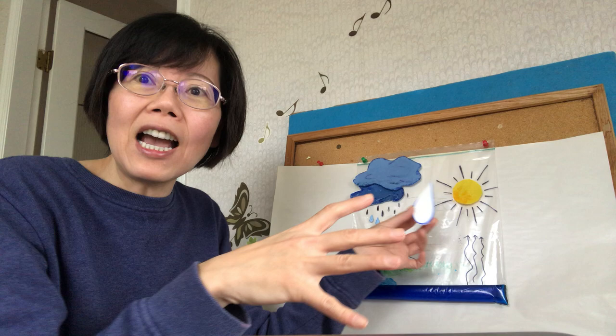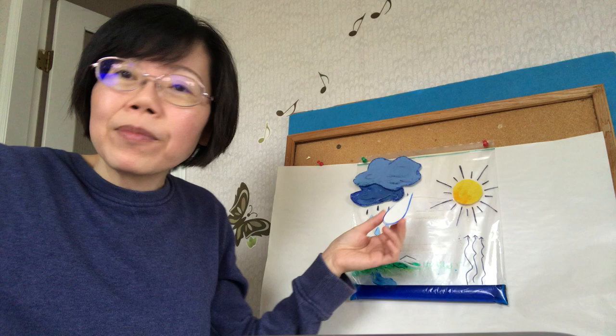And now the tiny water drop becomes lighter and lighter, and then it becomes vapor. Vapor is just like steam, becoming like a tiny water molecule. So it cannot just stay down because it's light. So it vaporizes all the way up, up, up to the sky.